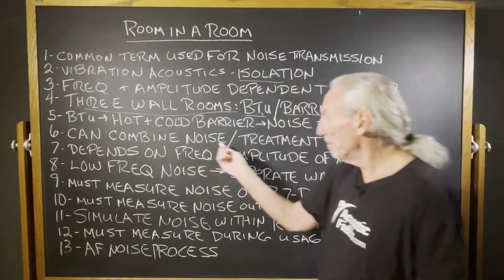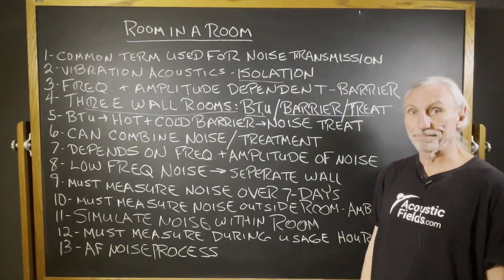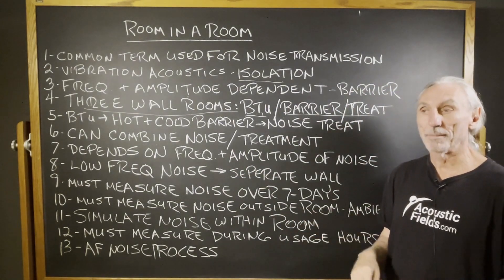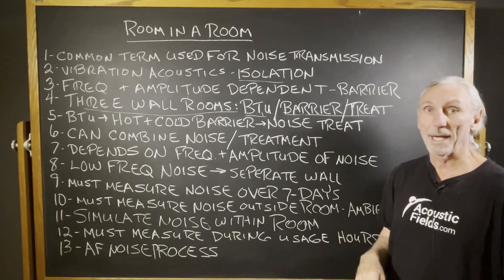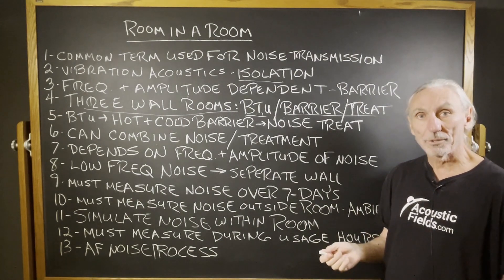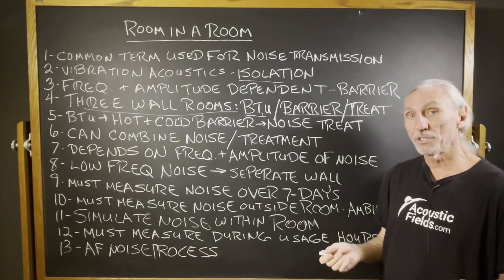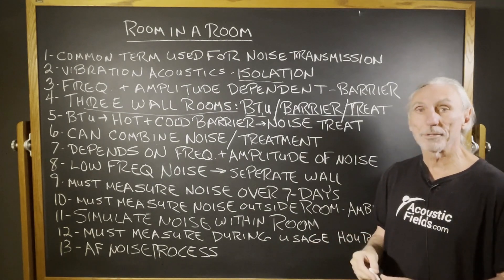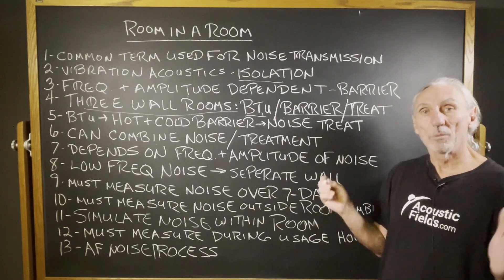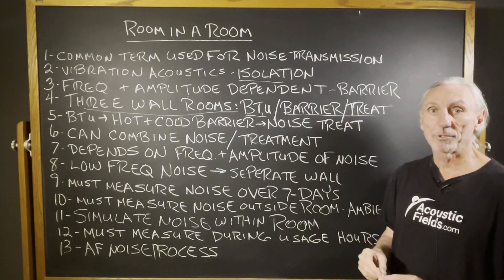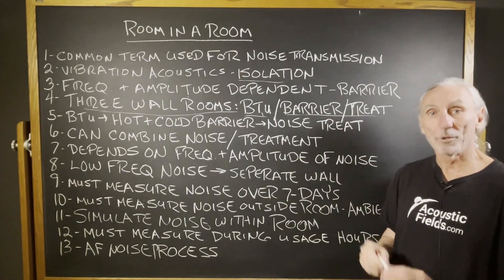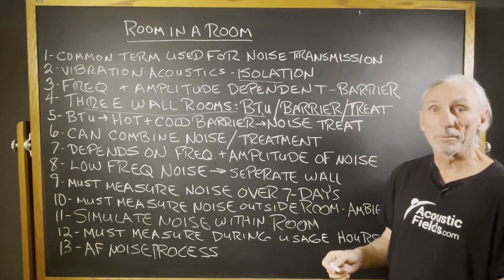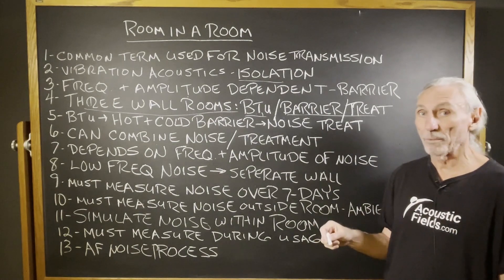Sometimes we can combine the noise and the treatment walls to reduce the amount of space requirements. Sometimes we can't — it just depends on the noise transmission issue. If we measure the noise and it's below 125 cycles, we're going to need a separate structure if we're going to do it right. A lot of people out there don't do it right, but we're all about doing it right.